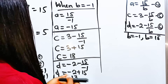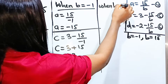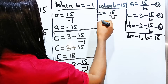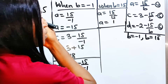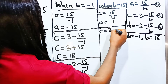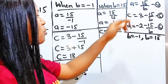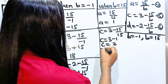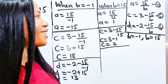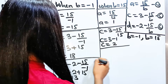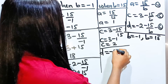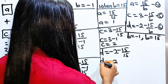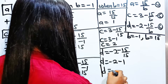Case 2, when B equals 15: A equals 15 divided by 15, so A equals 1. C equals 3 minus 15 over 15, which is 3 minus 1, so C equals 2. D equals minus 2 minus 15 over 15, which is minus 2 minus 1, so D equals minus 3.